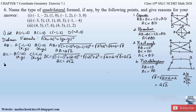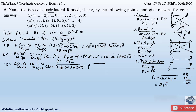Now let us find side CD. Assuming C as (x₁, y₁) = (−1, 2) and D as (x₂, y₂) = (−3, 0): CD = √[(−3 − (−1))² + (0 − 2)²] = √[(−2)² + (−2)²] = √(4 + 4) = √8 = 2√2. Therefore side CD is also equal to 2√2.